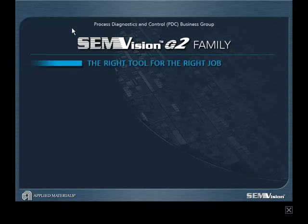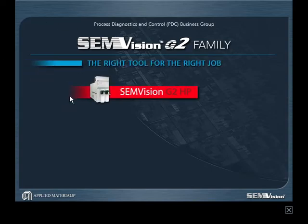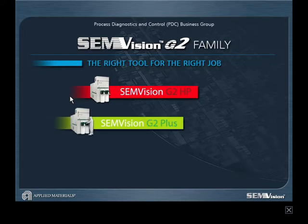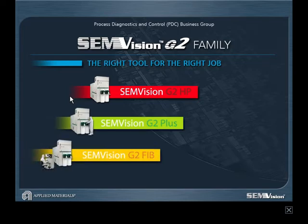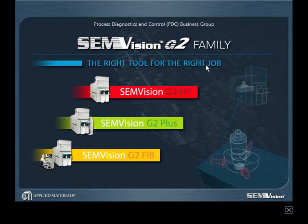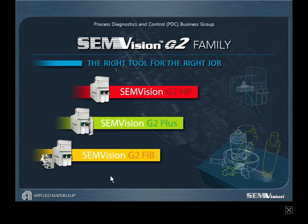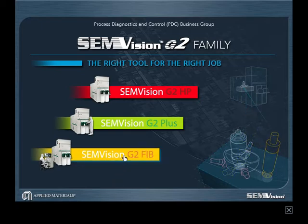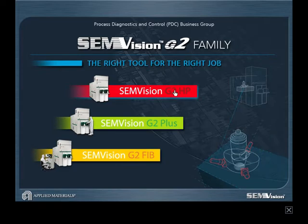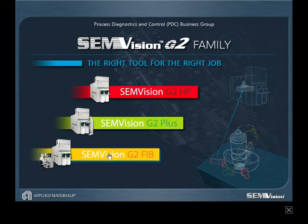G2 family. G2 HP. G2 Plus. G2 FIB. The Semvision G2 family is a foundation for revolutionizing the effectiveness of inline defect review and analysis, matching the right tool for the right job. The G2 product line enables selecting the optimized toolset.